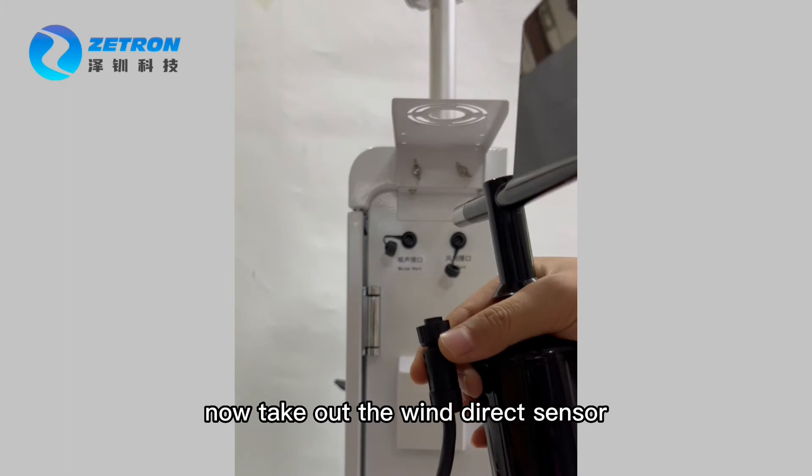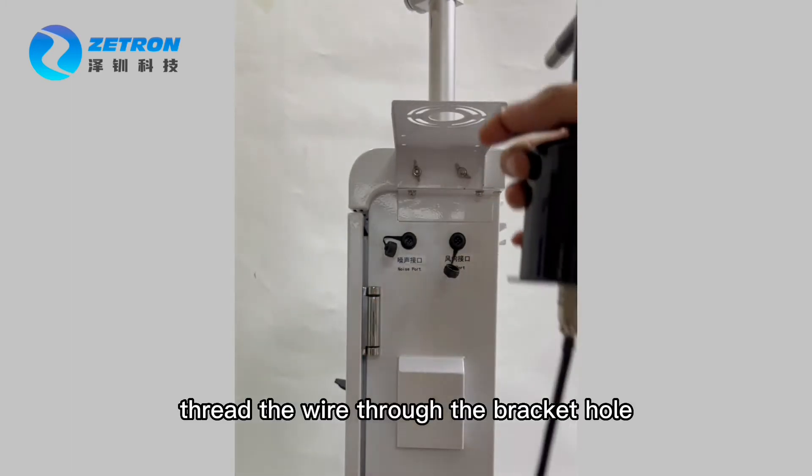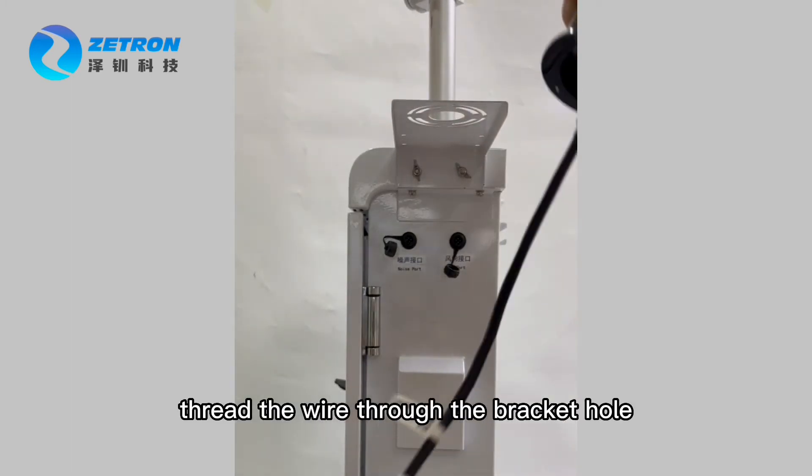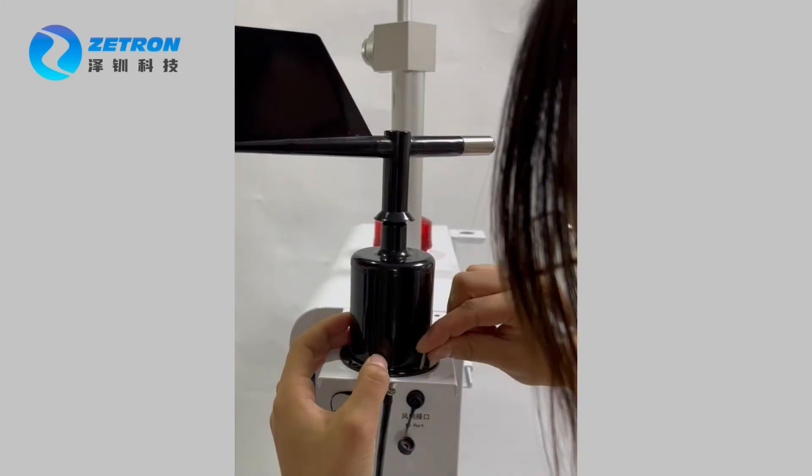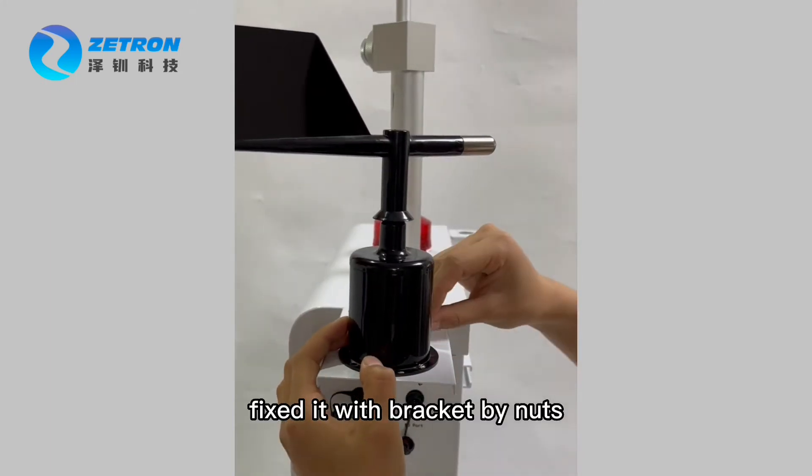Now take out the wind director sensor. Thread the wire through the bracket hole. Fix it with the bracket by nuts.